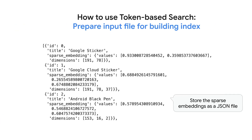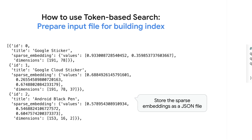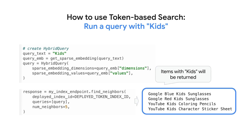Next, generate a sparse embedding for each item in your dataset. Store the resulting JSON file in cloud storage and use it to build a vector index with Vertex AI Vector Search. To query a sparse embedding index, create a hybrid query object that encapsulates the sparse embedding of your query text. This retrieves items containing specific words, like 'kids'. This demonstrates how to use token-based search with Vector Search.